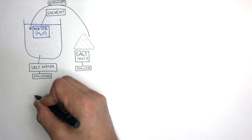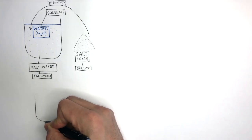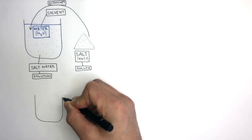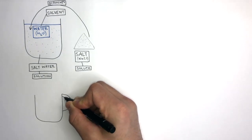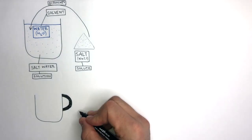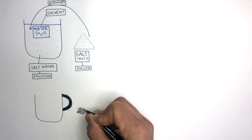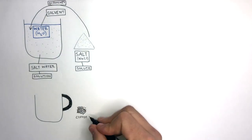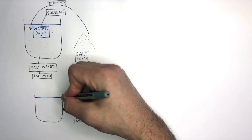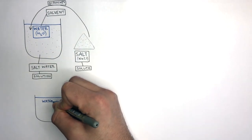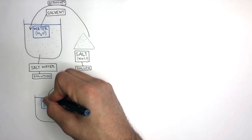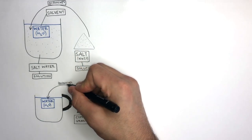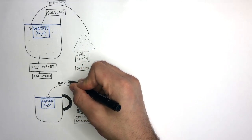To understand what a solute, solvent and solution is, let's think about how to make a cup of coffee. So first you need coffee granules. Next we have some water. We then add the coffee to the water, where the coffee dissolves in the water.